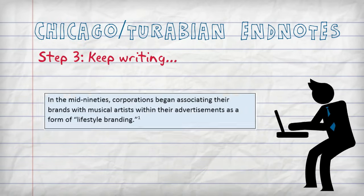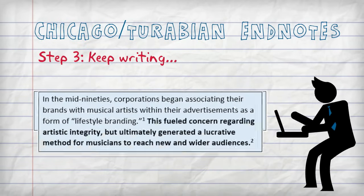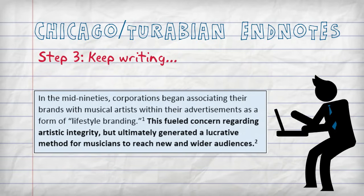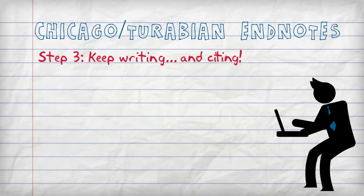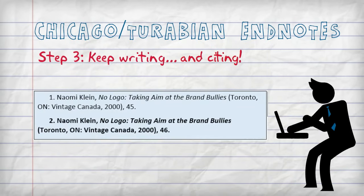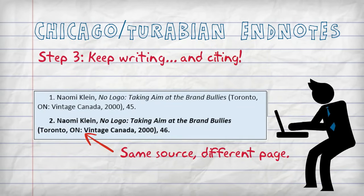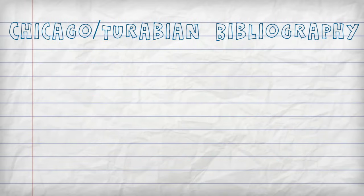Step 3: Keep writing your paper, adding new information, and inserting endnote markers where you need them. At the same time, you're citing the details about your sources with corresponding endnotes at the end of your paper, even if it's the same source as a previous endnote.